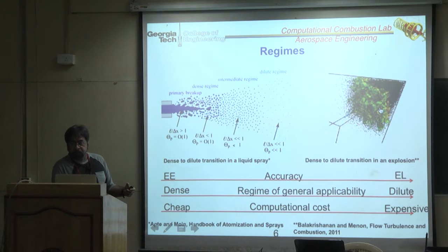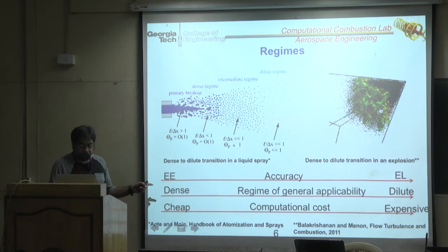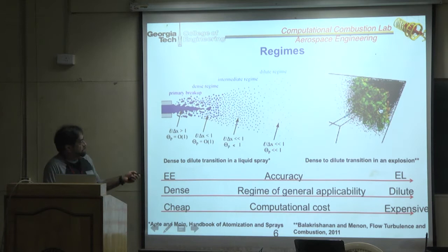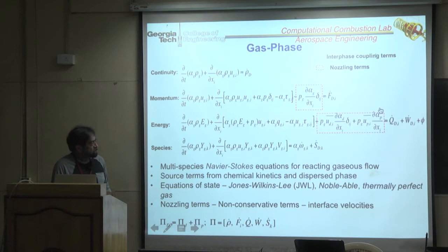Both scenarios — spray combustion and particle detonation — involve changing particle size due to combustion phenomena. Aluminum particles can burn to create flames; spray particles evaporate. In both cases particle size changes, and I'll run through the equations which are all published in papers.